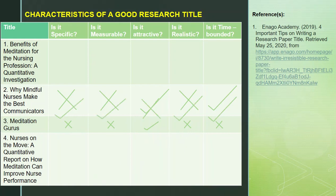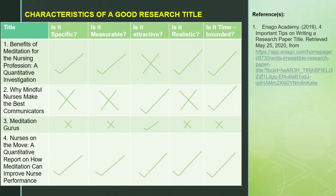However, number 1 is not as attractive to the reader compared to number 4. The phrase 'nurses on the move' appears interesting and might make readers ask why nurses are on the move. Further, it qualifies on the number of words since it has 14 words.